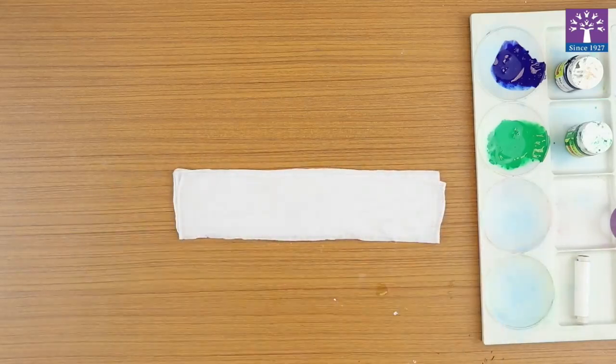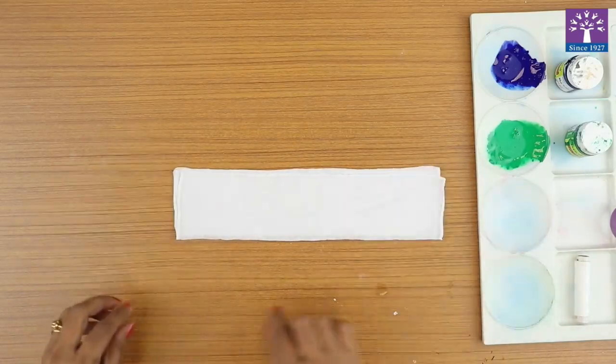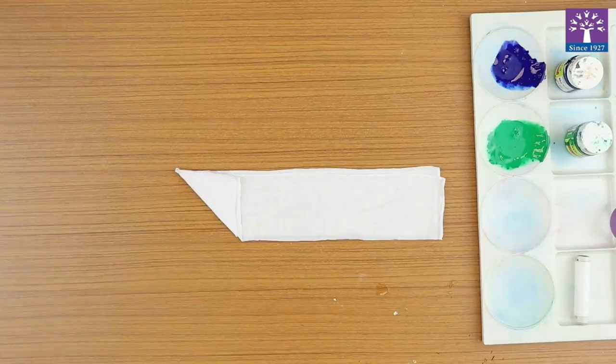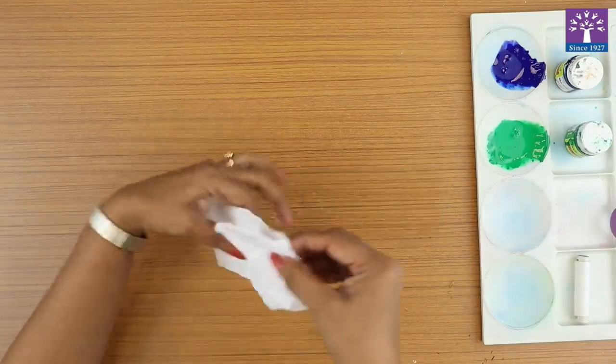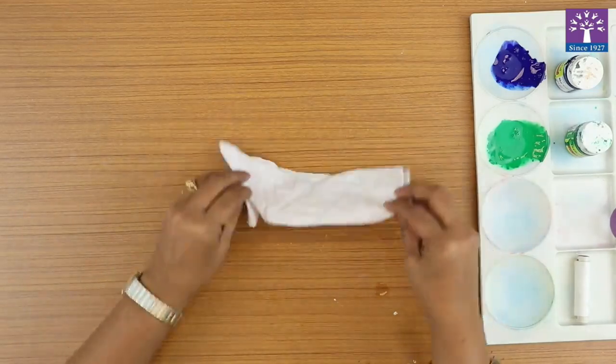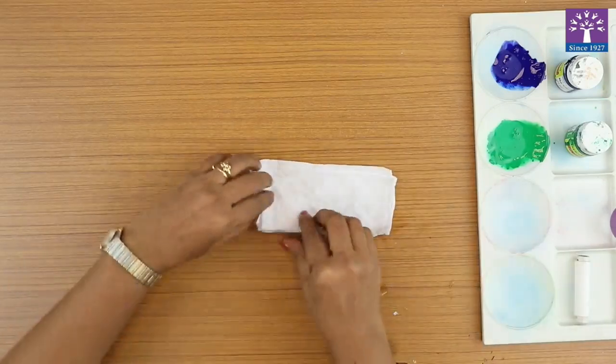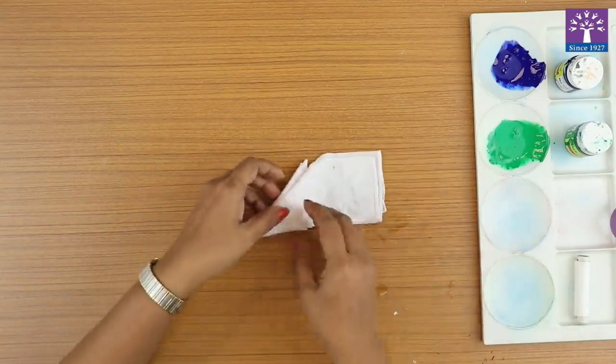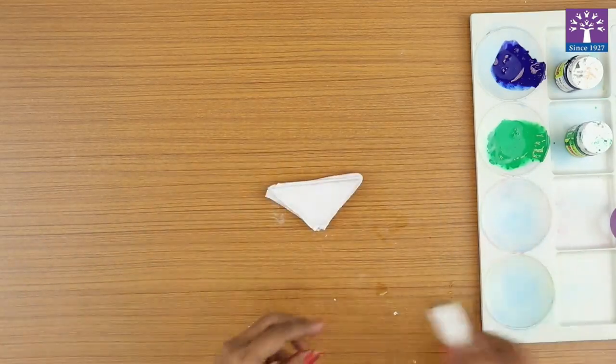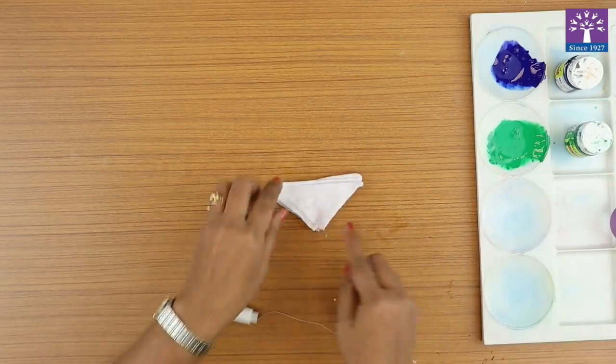Now I have not opened the fan fold, so my fan fold strip is intact. I will follow the steps to fold this cloth. With the thread, I'm going to tie the three corners.